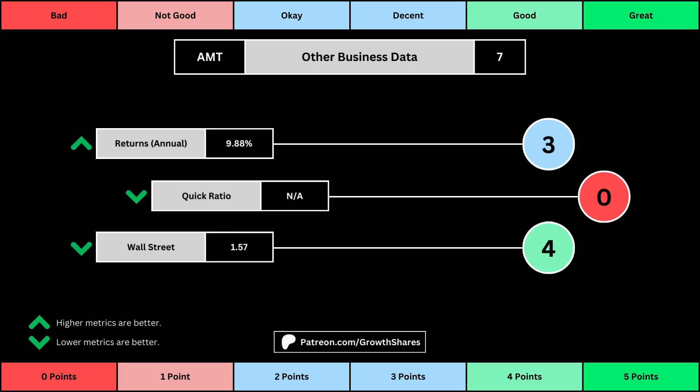The fourth set of metrics looks into other relevant data. First is the stock's performance over a set period of time — usually 10 years, but if the stock doesn't go that far back, we go with the earliest data up to 10 years. The quick ratio is basically how easy it is for the business to pay off its short-term obligations; we want that high so that it's easy to get rid of those debts. And then Wall Street is the average consensus rating Wall Street analysts give the stock, from a strong buy of 1 to a strong sell of 5. Again, the better values get a higher point total.